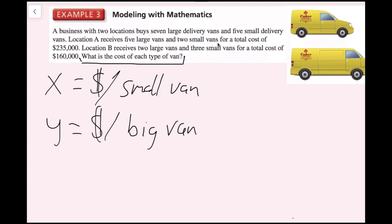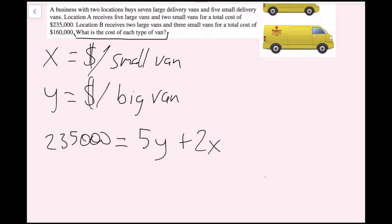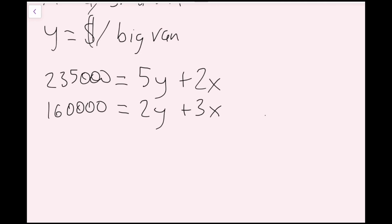Now set up equations. For Location A — 5 large vans and 2 small vans costing $235,000 — the equation is: 235,000 equals 5y plus 2x. For Location B — 2 large vans and 3 small vans costing $160,000 — the equation is: 160,000 equals 2y plus 3x. I've successfully set up the system of equations; now I just have to solve it using elimination.